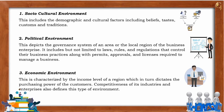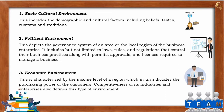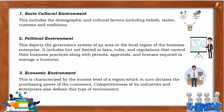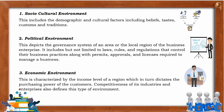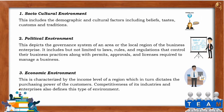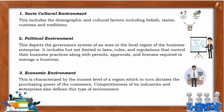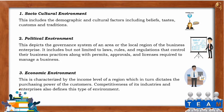Number two: political environment. This depicts the governance system of an area or local region of the business enterprise. It includes but is not limited to laws, rules, and regulations that control business practices, along with permits, approvals, and licenses required to manage the business.